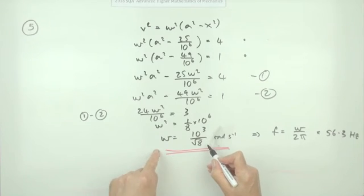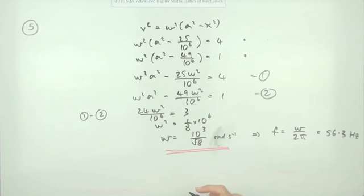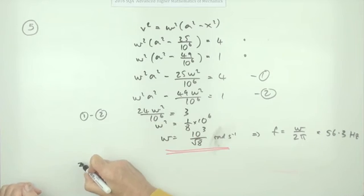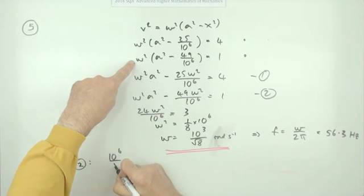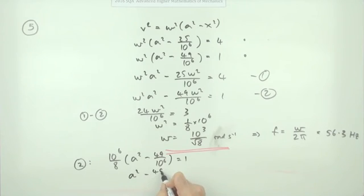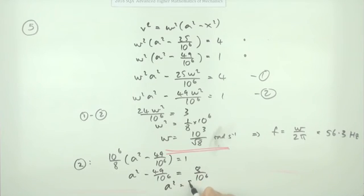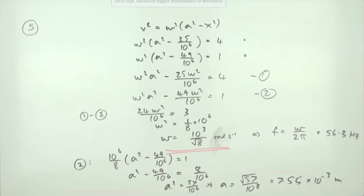Substituting ω² = 10⁶/8 back into equation 2 to find A: (10⁶/8)(a² − 49/10⁶) = 1, so a² − 49/10⁶ = 8/10⁶, giving a² = 57/10⁶. Therefore a = √57/10³ ≈ 7.549 × 10⁻³ metres, or 7.55 millimetres — the same amplitude as before.